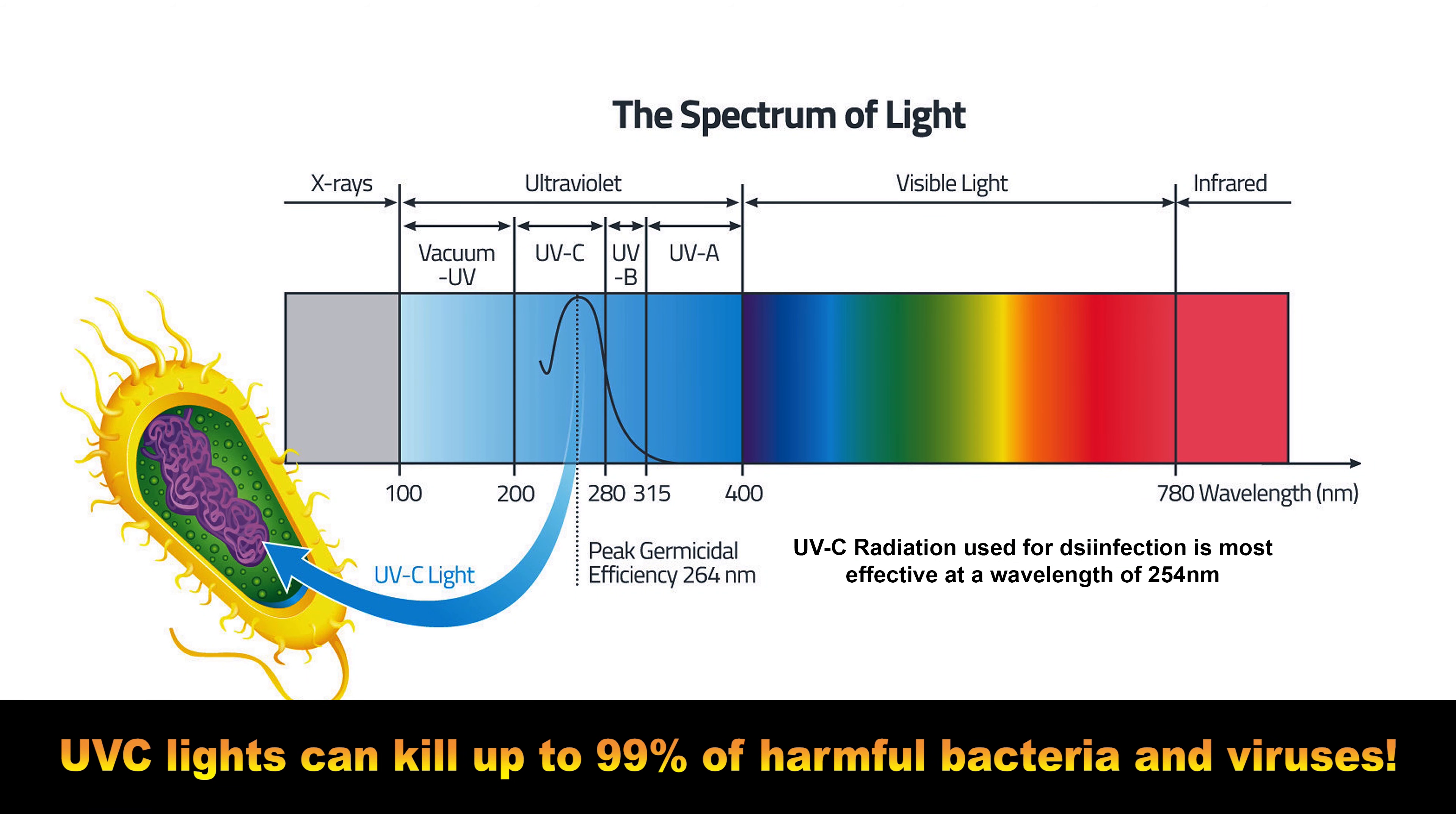Ultraviolet light comes in four wavelength ranges which determines the light's intensity, strength, and source.